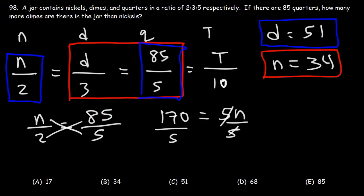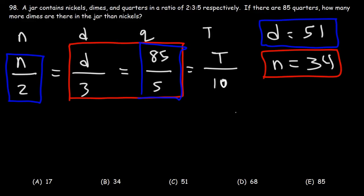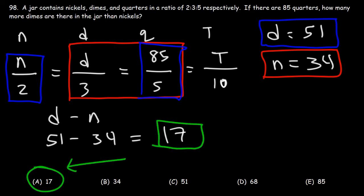So now we can answer the question. How many more dimes are there than nickels? So this is going to be d minus n, which is 51 minus 34, and that's going to be 17. So there are 17 more dimes than nickels, which means A is the correct answer.